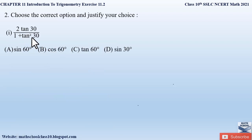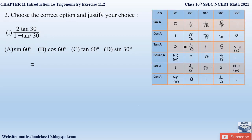Let us solve the first part of the question, which says: 2 tan 30 divided by 1 plus tan square 30. We have to find the value of this expression. First, let us refer to the trigonometry table to find the value of tan 30. In my previous videos I have shown you the trick on how to remember this table without memorizing it — do watch question number 1 from the same exercise.